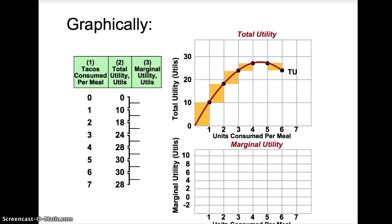Now we can calculate marginal utility, the change in total utility from a one unit increase in consumption. Eating one taco results in a marginal utility of 10. Two tacos will cause marginal utility to increase by 8 utils, three tacos 6 utils, four tacos 4 utils, five tacos 2 utils, six tacos 0 marginal utility, seven tacos marginal utility will be negative 2 utils.